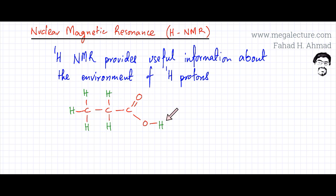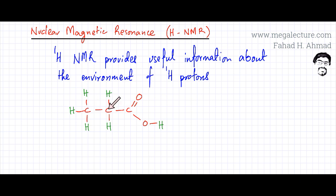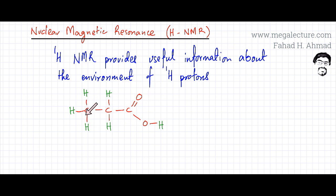By looking at the environment of these hydrogen protons, for example, if I know the environment of a hydrogen proton and know that it is bonded to oxygen, which is bonded to carbon making a double-bonded oxygen, I would be able to figure out the structure of the entire molecule. If I know that a hydrogen is bonded to a carbon which is bonded to two carbons on both sides, and on one side there's a carbon double-bonded oxygen, by just figuring out what the environment around these hydrogen atoms is, I am able to figure out the rest of the structure of the molecule.